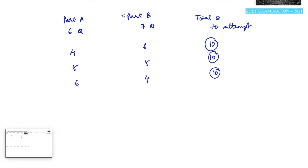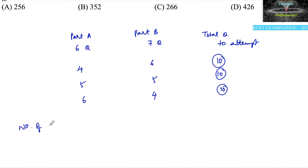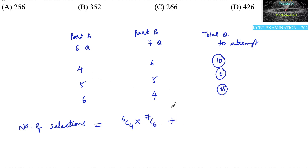The number of selections a student can make is: from 6 questions choose 4, that is 6C4, and from 7 questions choose 6, that is 7C6; or 6C5 and 7C5; or 6C6 and 7C4.